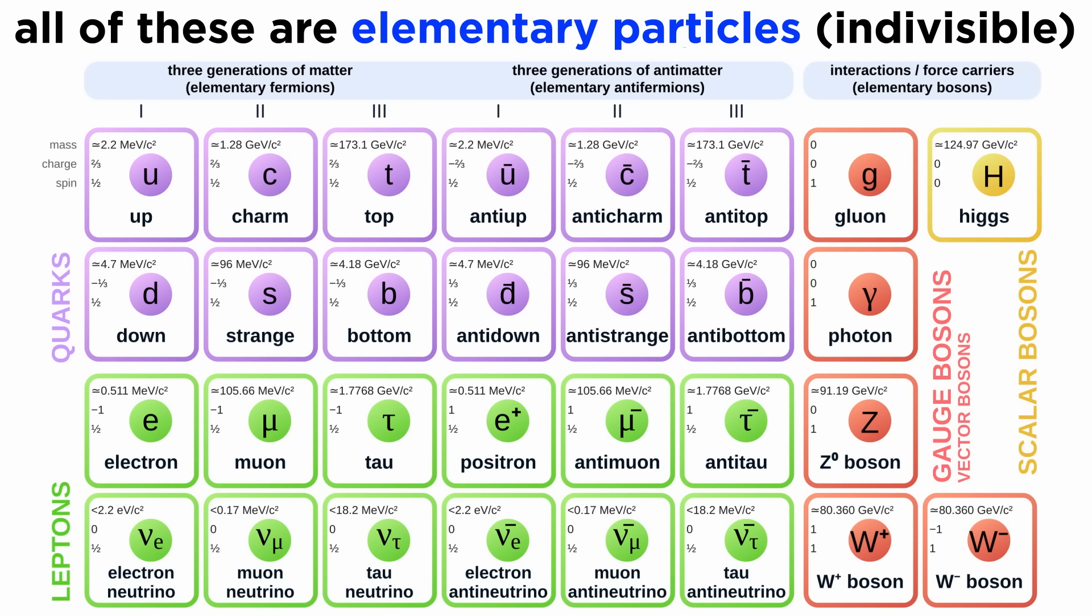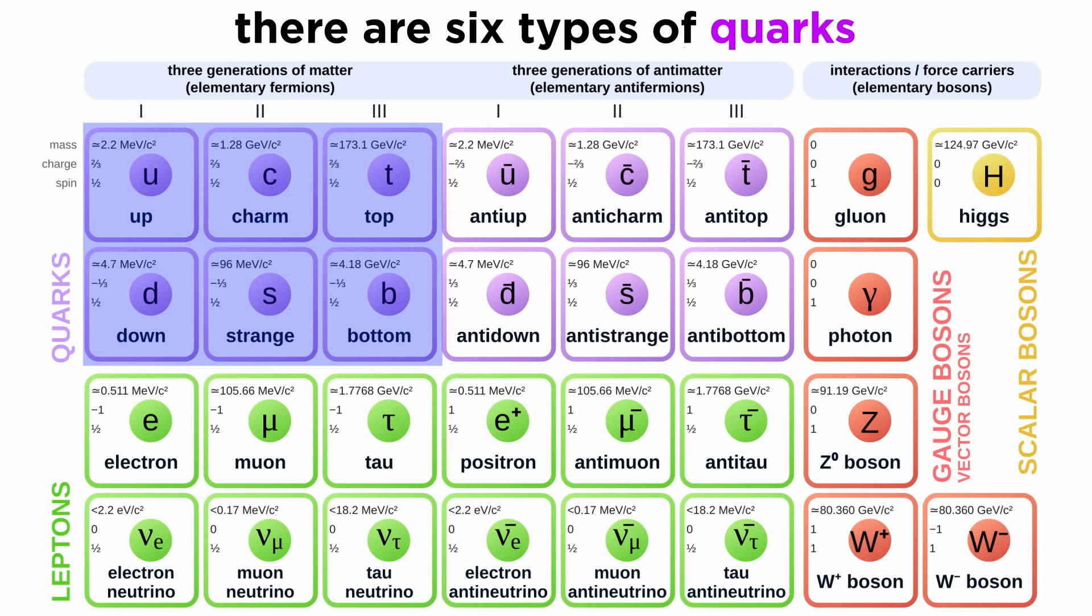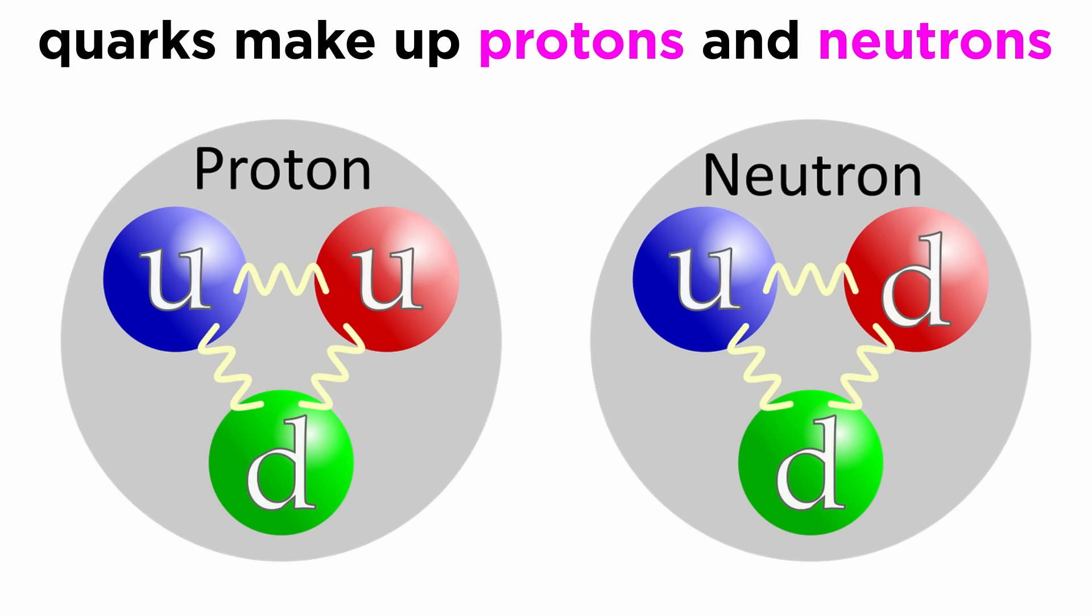It is currently believed that every particle in the model is an elementary particle, which means that it cannot be broken down into smaller parts. The first group of particles are quarks, of which there are six types—up, down, top, bottom, strange, and charm. These quarks make up protons and neutrons, so they make up most of the mass of visible matter in the universe.